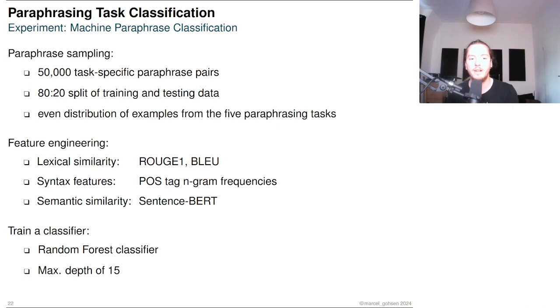To check if a machine can reach similar performance, we built an automatic classifier and repeated the experiment. For that we sampled 50,000 task-specific paraphrases from the same 10 ground truth datasets. So we used 5,000 paraphrases per dataset. We split these 50,000 paraphrases in an 80-20 fashion into training and test data while maintaining an even distribution of examples from the five paraphrasing tasks.